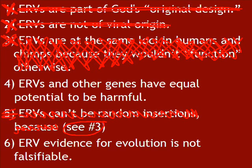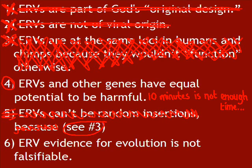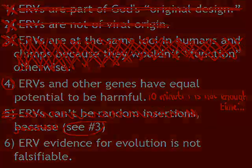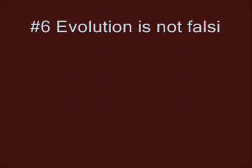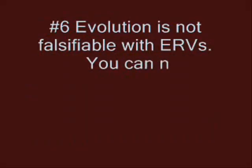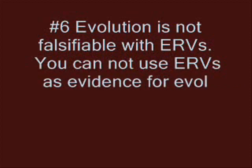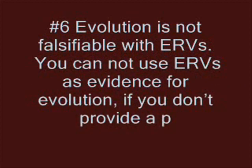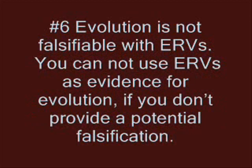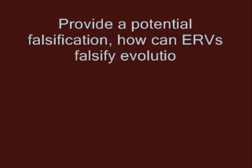That leaves us only with numbers 4 and 6. I'm not going to argue against number 4, not because I agree with you, but because I only have 10 minutes here, so I'll move straight on to your challenge. I think that assertion and that challenge are worth repeating here. You said, and I quote: 'Evolution is not falsifiable with ERVs. You cannot use ERVs as evidence for evolution if you don't provide a potential falsification.' Challenge: provide a potential falsification. How can ERVs falsify evolution?